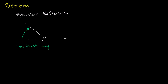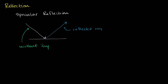The incident ray approaches the surface, and you can almost imagine that it bounces off at essentially the same angle but in the other direction. It hits the surface and bounces off. We call the outgoing ray the reflected ray, after it has bounced off the surface. The angle of incidence is actually equal to the angle of reflection.